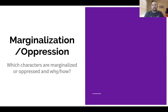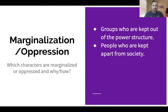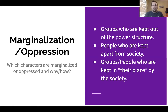Our second theme is marginalization and oppression. Which characters are marginalized or oppressed, and why or how? Marginalization means certain groups are kept out of the power structure — they're made to be less than other groups. These are people who are kept apart from society, shunned, or kept in their place. Think of the idea of 'they know their place.' Steinbeck uses a lot of marginalization in this novel.